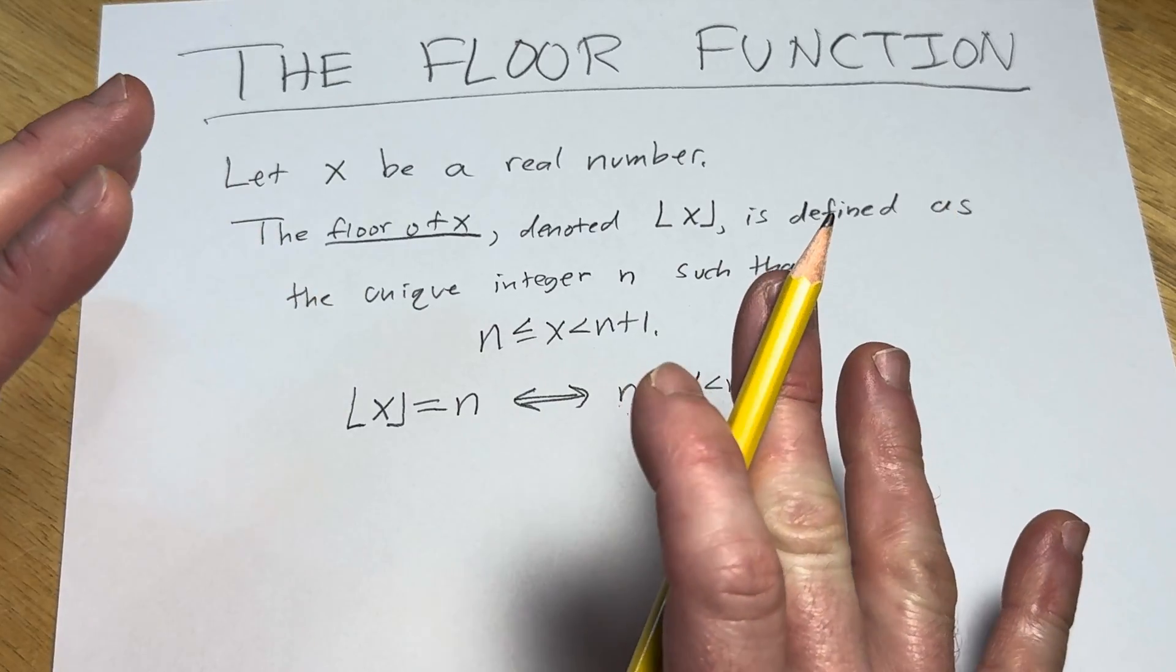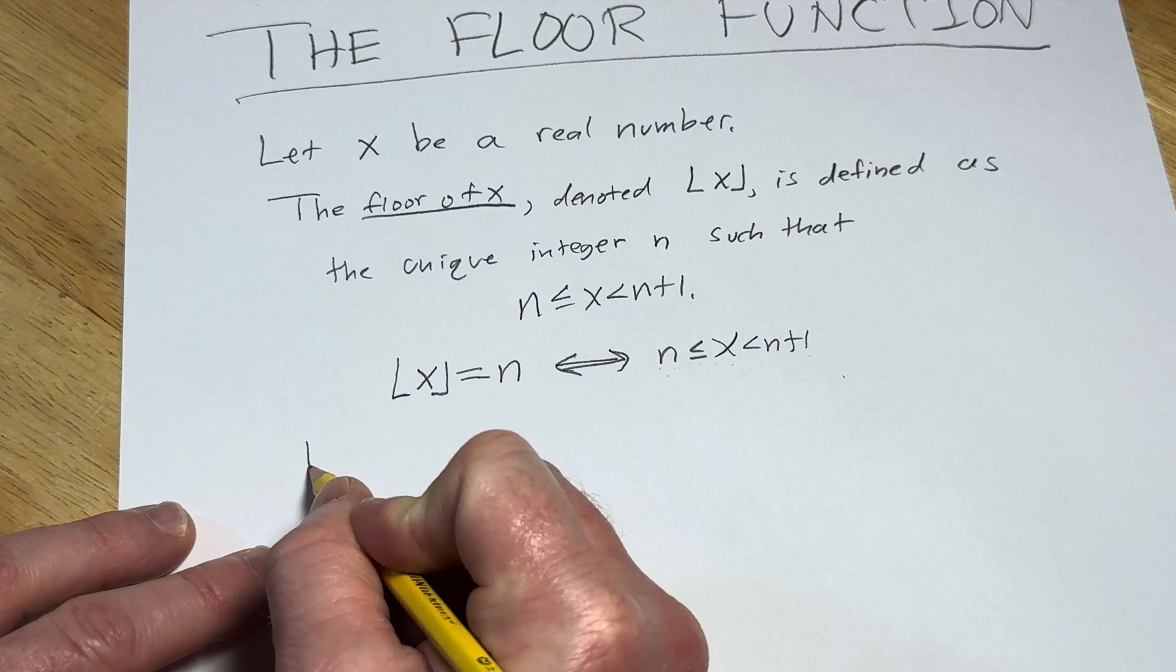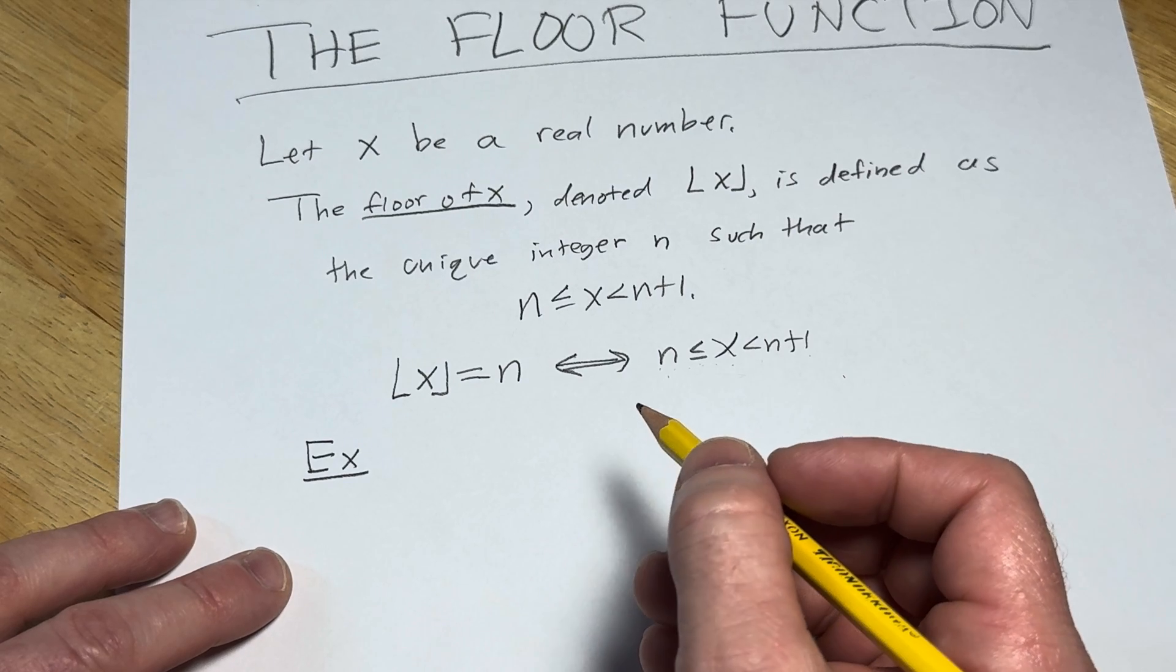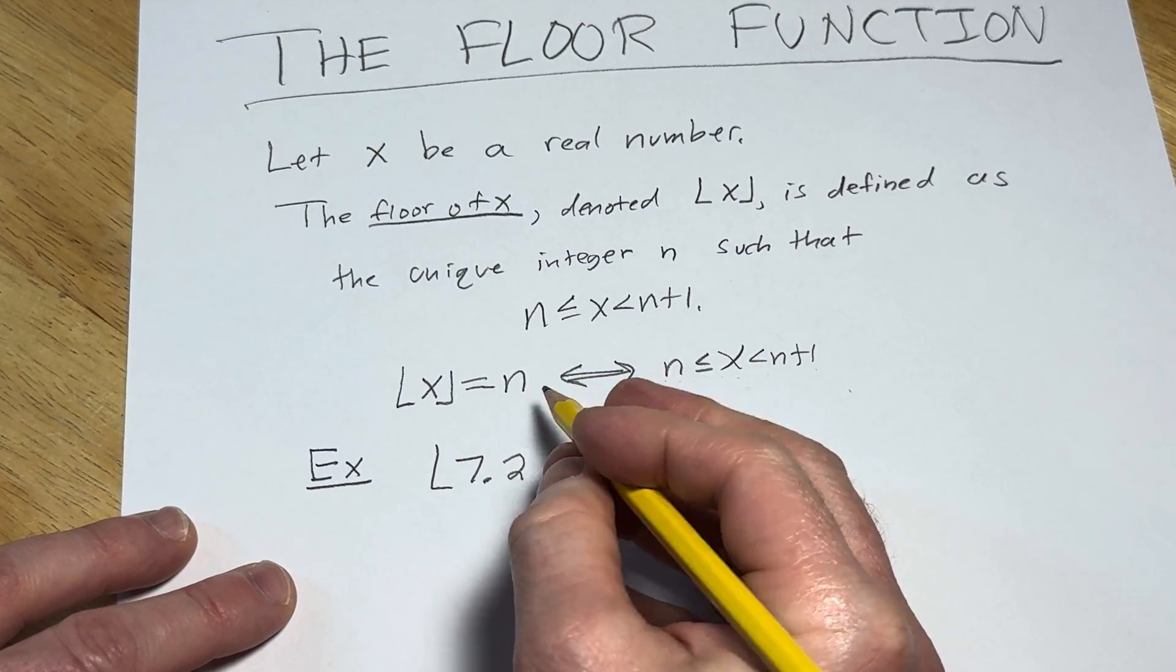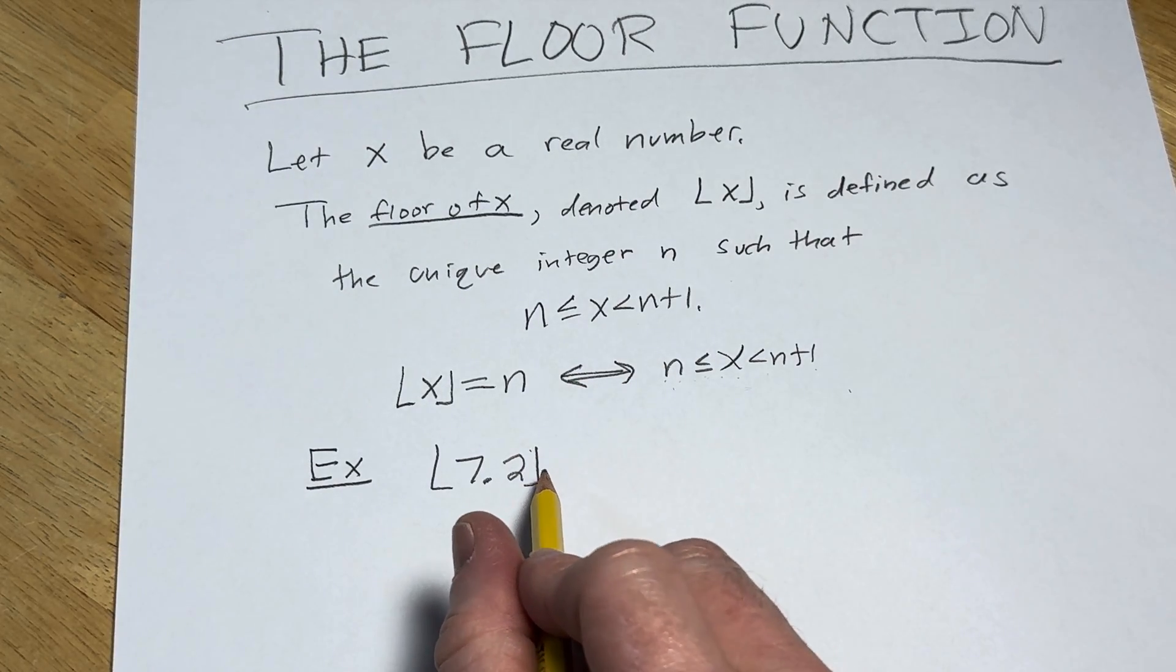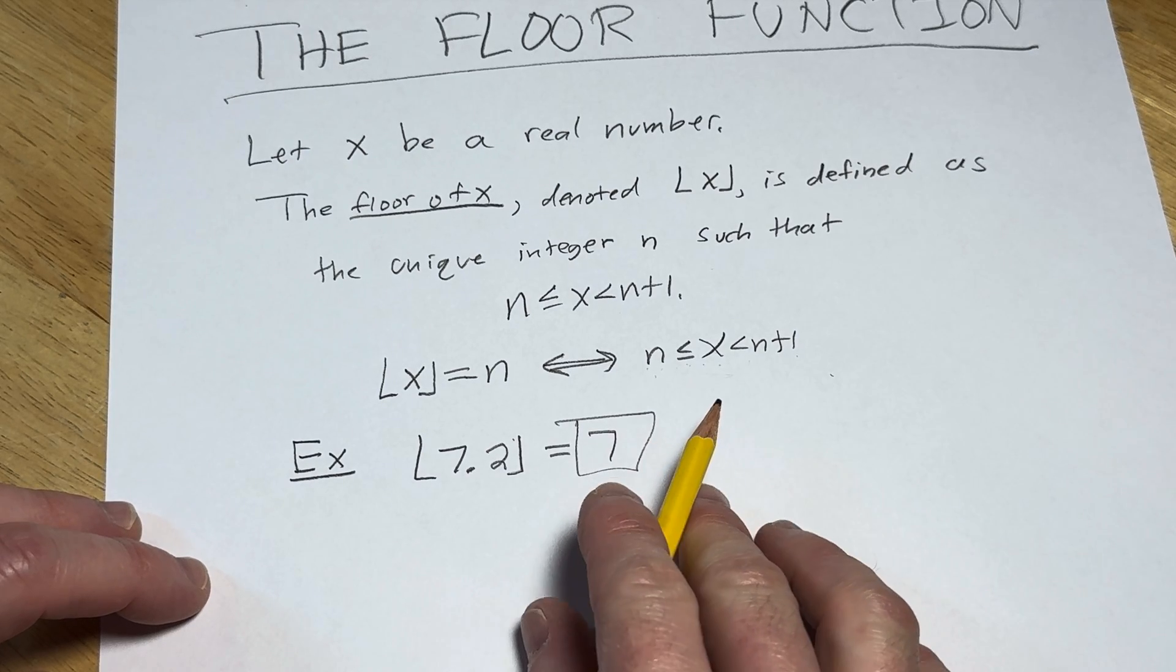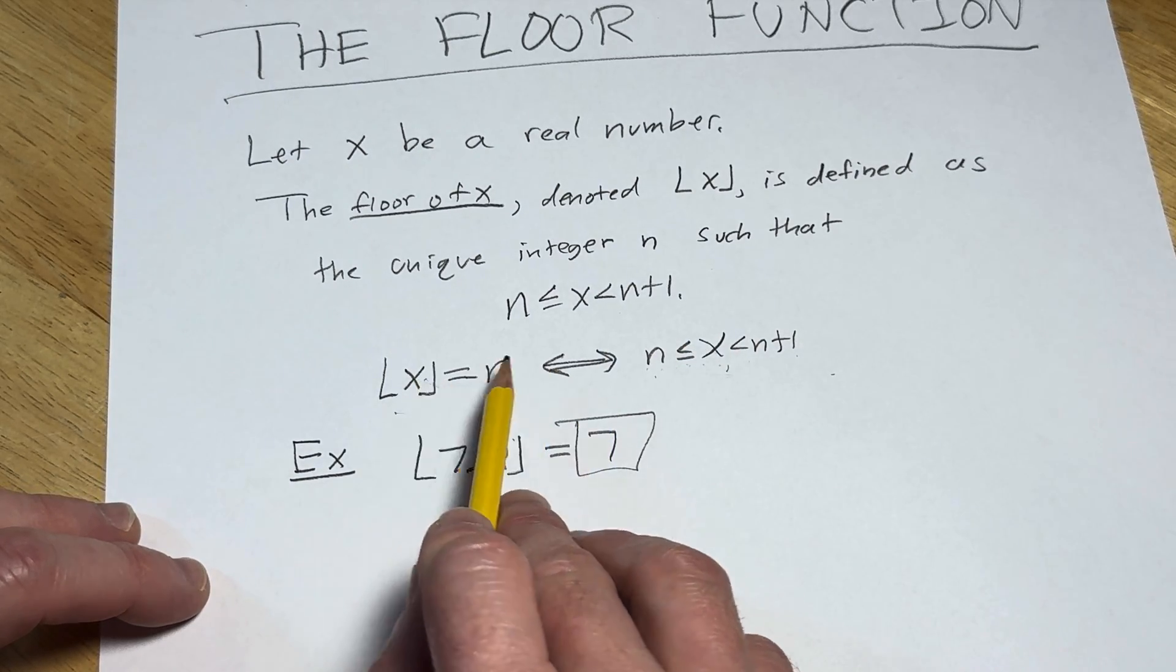Intuitively, it floors the numbers. So for example, let's just jump right to it. Let's look at the floor of 7.2. What is the floor of 7.2? Well, in this case, you bring it down. So this is equal to 7. That would be the answer, just brings it down. And you could look here and you could see that if you use this formula...